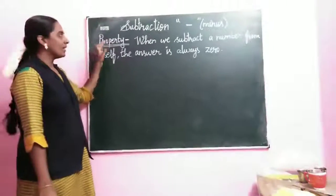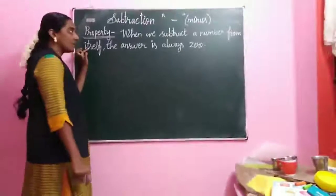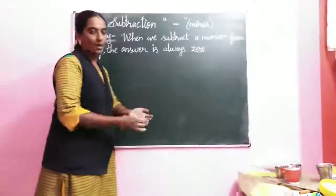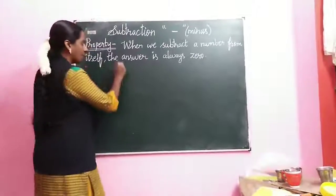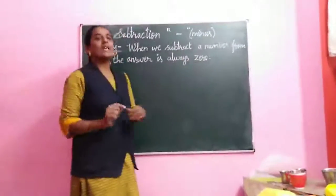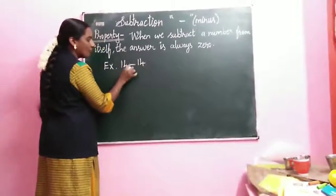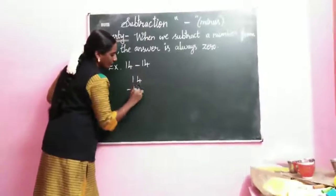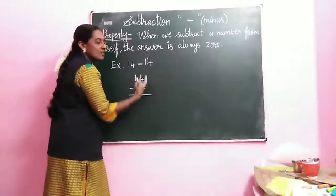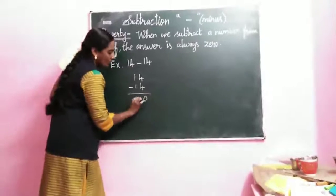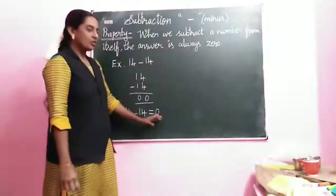Now we are going to the next property. When we subtract a number from itself — for example, 14 minus 14 — these are the same numbers. So the answer is always 0.